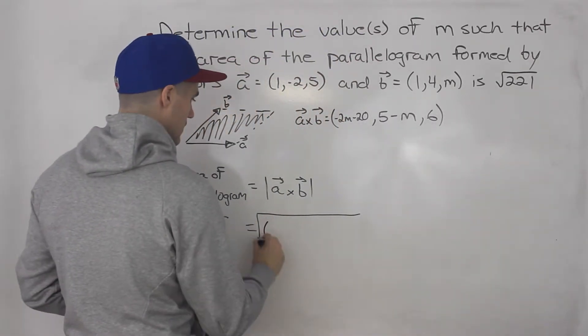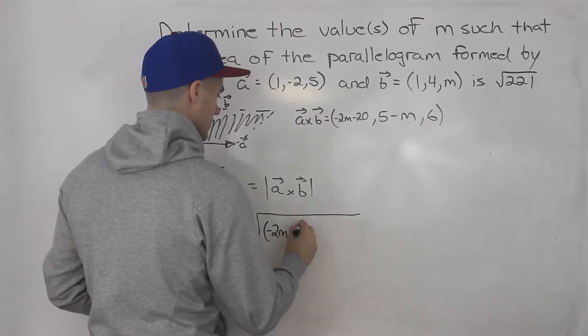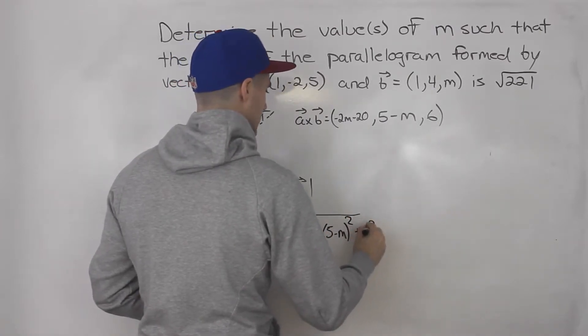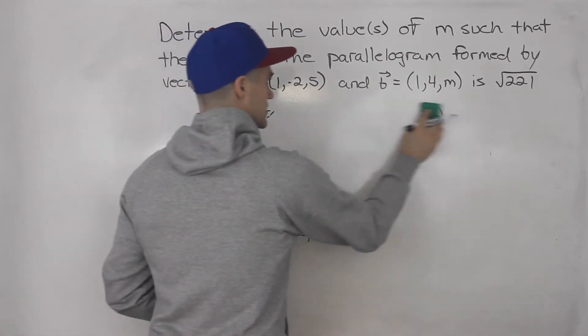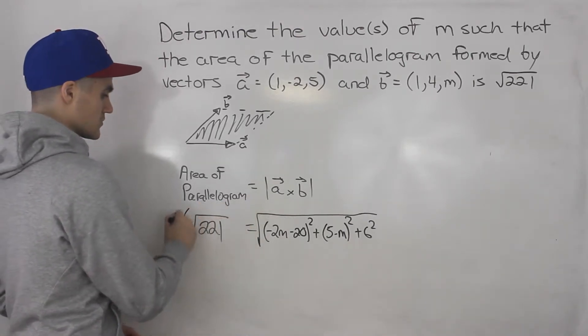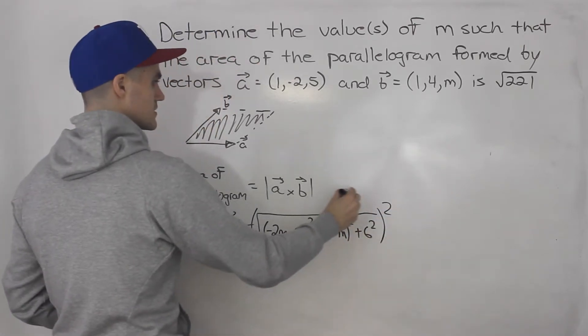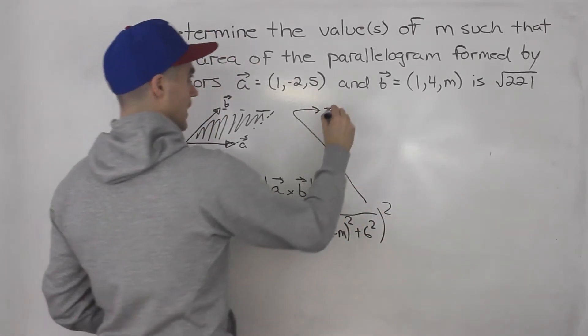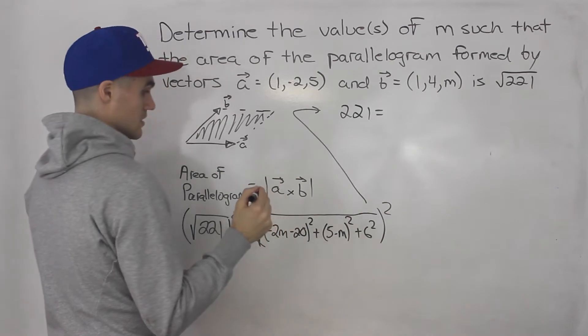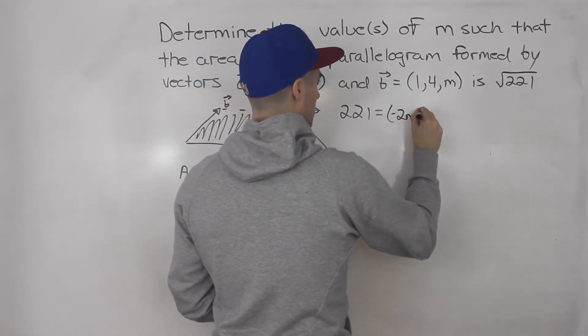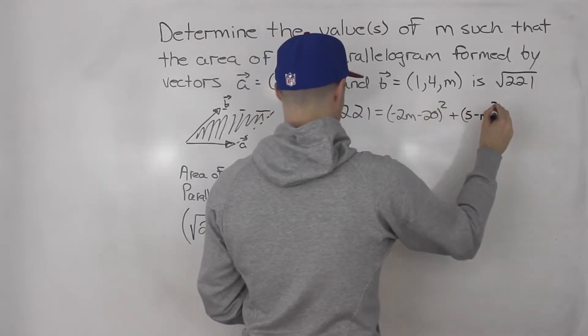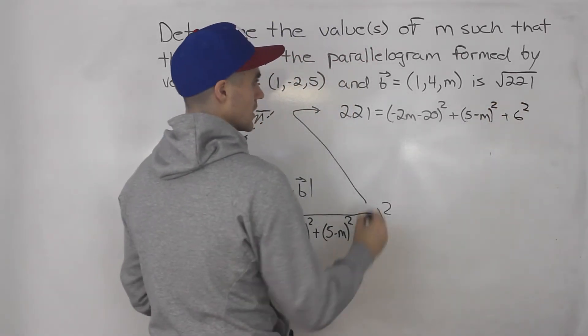So we'll have negative 2m minus 20 squared plus 5 minus m squared plus 6 squared. Now we just simply have an equation to solve and we can solve for that m value. Notice that we have a square root on both sides, so we could square both sides. So 221 equals negative 2m minus 20 squared plus 5 minus m squared plus 6 squared.